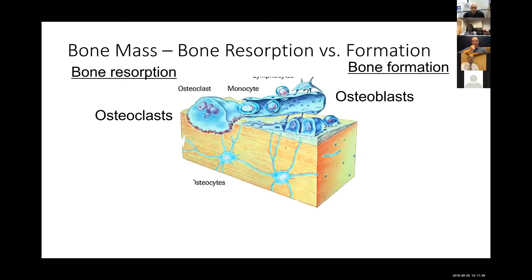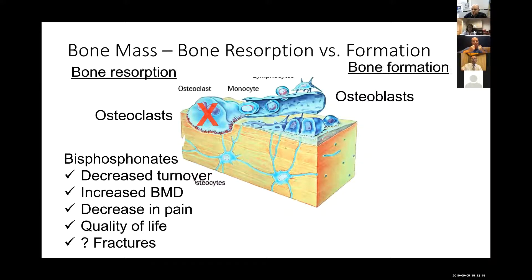As everyone on this call is familiar with, we can think about dynamic bone and bone growth as a process of bone resorption driven by osteoclasts, or bone formation driven by osteoblasts. Since we're talking about therapy, bisphosphonates are commonly used to target osteoclasts, to decrease bone turnover, increase bone mineral density, decrease pain, and ideally improve quality of life and hopefully decrease the risk of fractures.